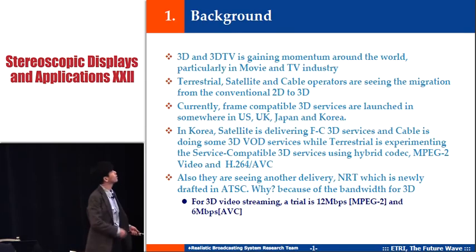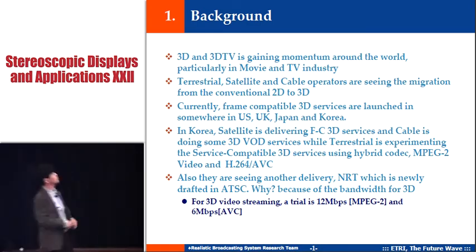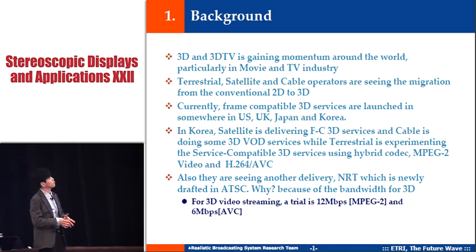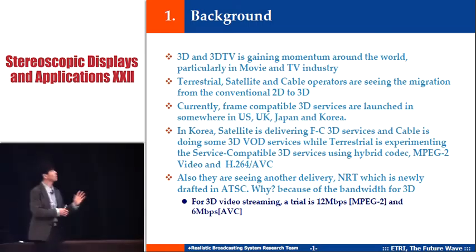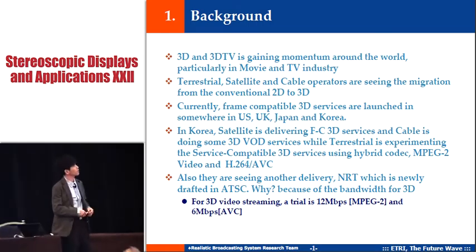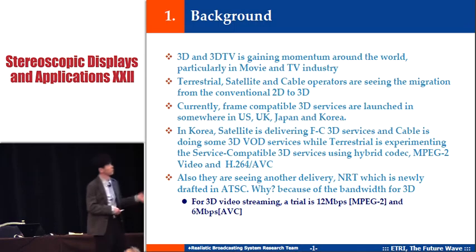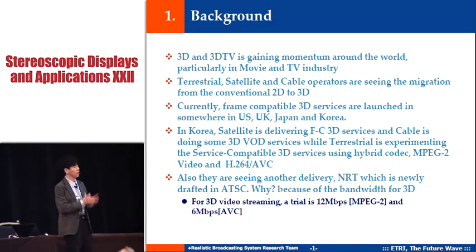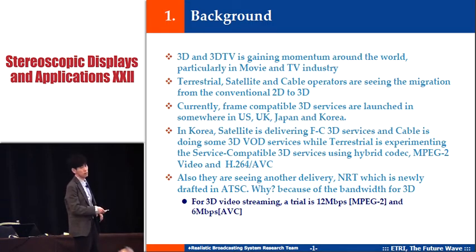Here is the background. Currently, 3D TV is gaining momentum around the world, particularly in the movie and TV industry. Terrestrial, satellite, and cable operators are seeing the migration from conventional 2D to 3D. Frame-compatible 3D services are launched in the United States, UK, Sky, Japan, and even Korea, where satellite operators deliver frame-compatible 3D services, cable does 3D VOD, and terrestrial is experimenting with service-compatible 3D using hybrid codecs — MPEG-2 video and H.264 AVC.